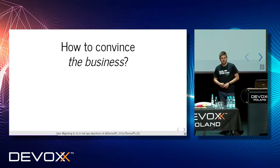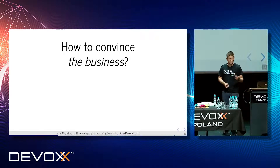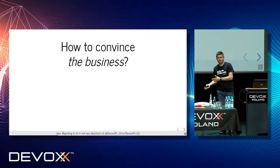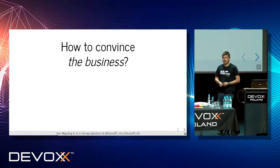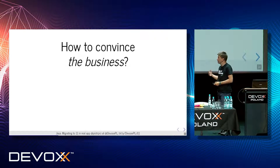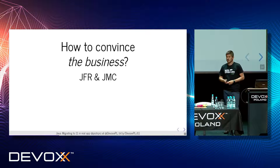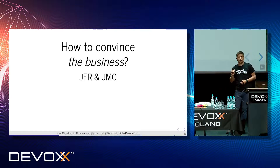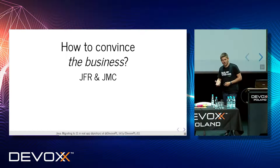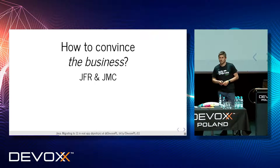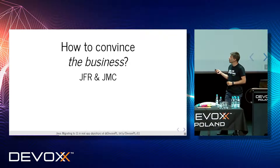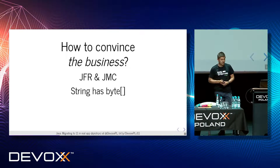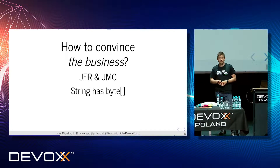How to convince the business? If you'd like to do something, you need to get the budget, the time, and the manpower. So before you start actually migrating, you need to convince someone to give money and time for that. In my opinion, there are at least a few valid arguments or benefits from migrating to Java 11. First, Java Flight Recorder and Java Mission Control — with just one or two percent overhead in production, you can record what's happening under the hood.